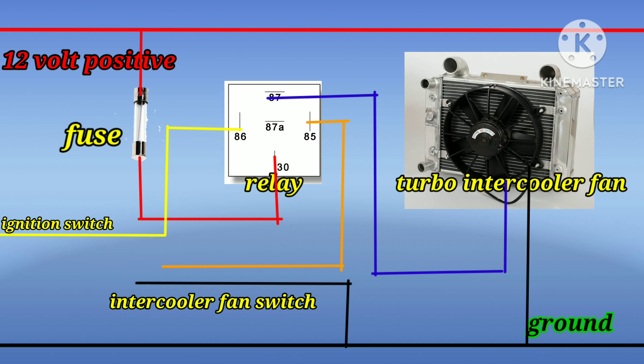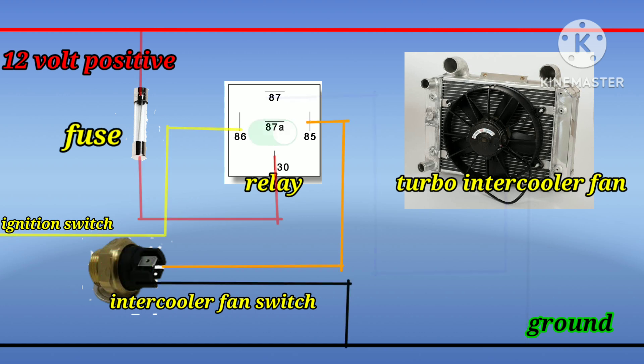Once the Intercooler Switch reaches the designated temperature, it will switch on and Ground will flow to Number 85 of Relay. And when the Ground flows to the Relay, Relay will switch on. And when the Relay is on, Number 30 and Number 87 will connect. When Number 30 and Number 87 connected, Positive Supply flows to the Intercooler Fan.